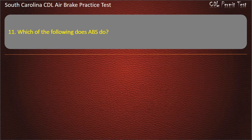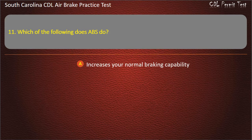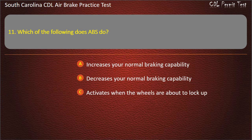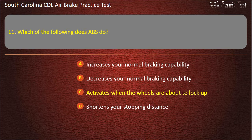Question 11: Which of the following does ABS do? Increases your normal braking capability, decreases your normal braking capability, activates when the wheels are about to lock up, or shortens your stopping distance. Answer: Activates when the wheels are about to lock up.